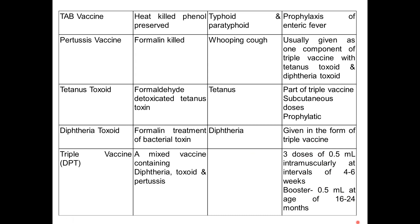A booster dose for DPT is given 16 to 24 months after the three doses. Tetanus toxoid, when given individually, is a prophylactic vaccine administered subcutaneously. A newly added vaccine is the mRNA vaccine for COVID-19, which is different from the types discussed. If you want to know more about COVID vaccines, check the link in the description. That's it for today — see you in the next video!